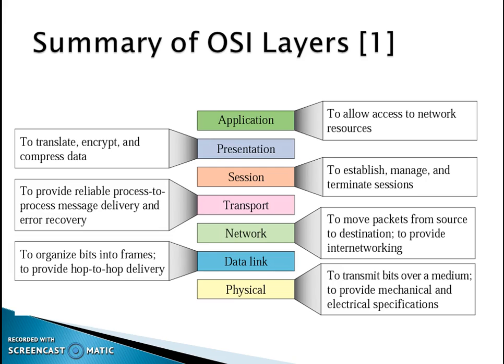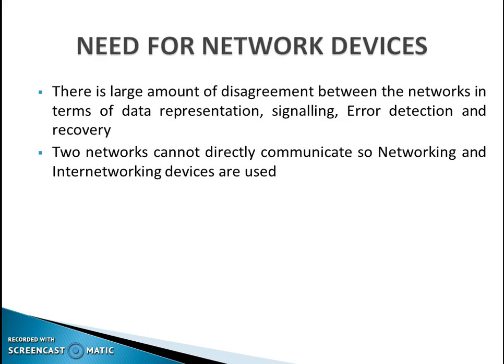Now with this summary in mind, let's go to our main topic: networking and inter-networking devices. We should know why we require these devices. We already know that if the data between the transmitter and receiver is of the same nature, we can directly transmit the data via wires. But in networking, there is a large amount of disagreement between networks in terms of data representation, signaling, formats, error detection, etc. That is why two networks cannot directly communicate via a simple wire, and we need specialized networking and inter-networking devices.